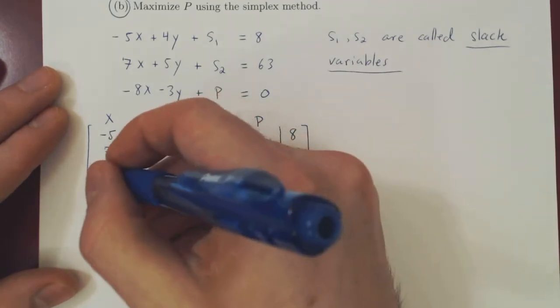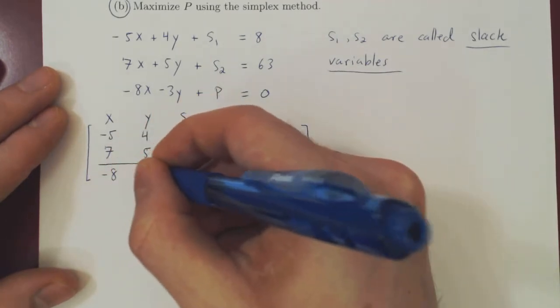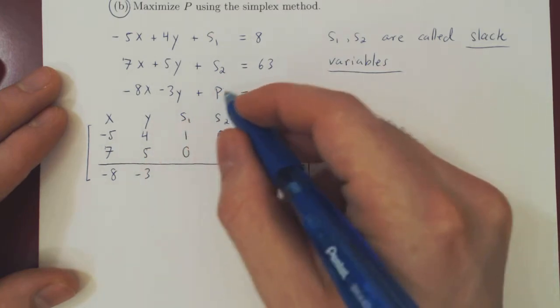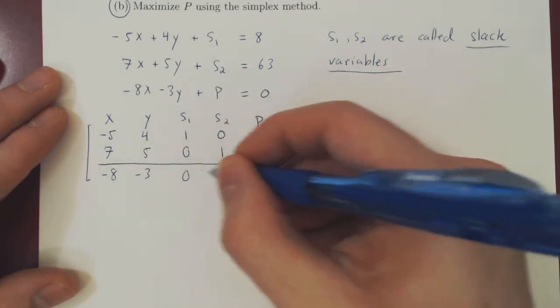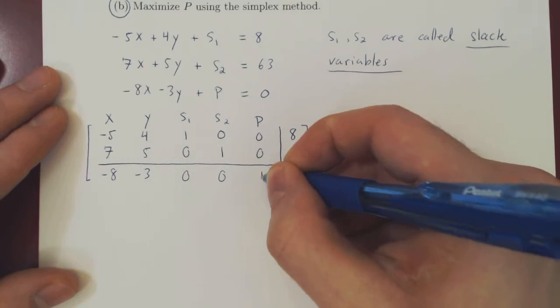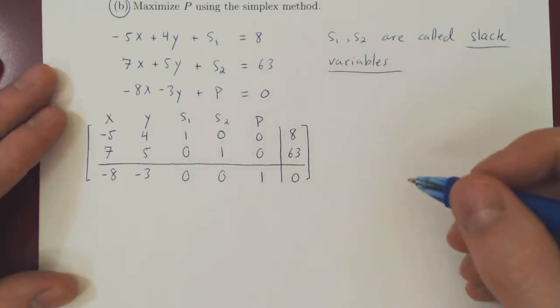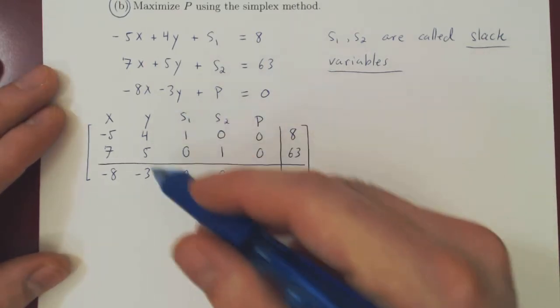Now the equality becomes negative 8x, negative 3y, there is no s1 or s2 so 0s1, 0s2, 1 times p equals 0. So now we have the so-called initial simplex matrix.